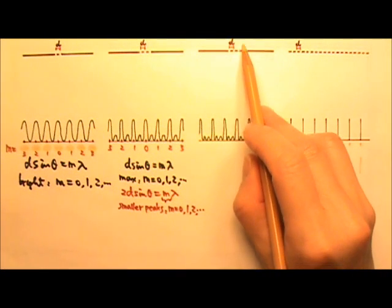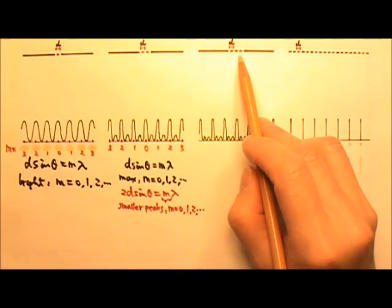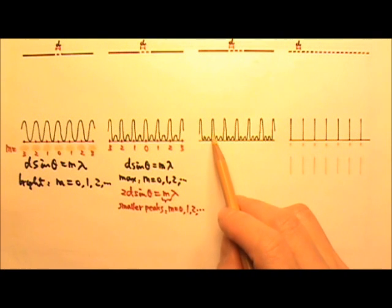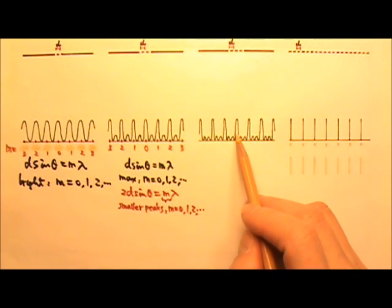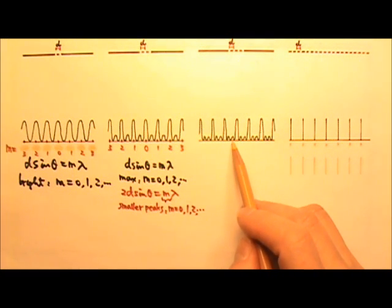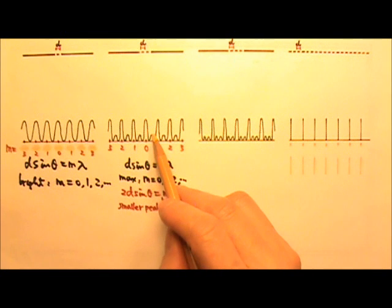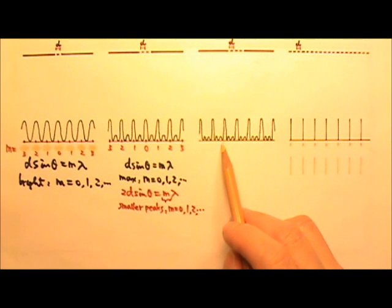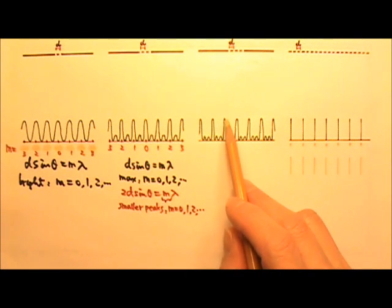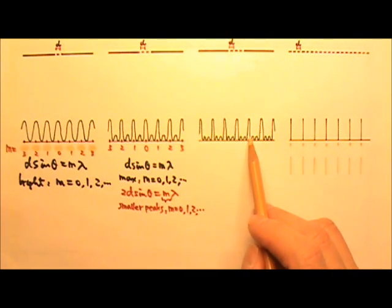If we add one more slit to make it four slits, then we're going to get two smaller humps in between those M equals whole number maximum. And those two smaller humps would be even weaker in intensity than those ones over there. It turns out that the more slits we add, the more and the smaller the little humps we have in between. As a result, we get narrower, sharper M equals whole number maximum.